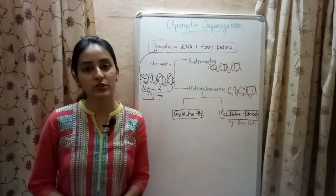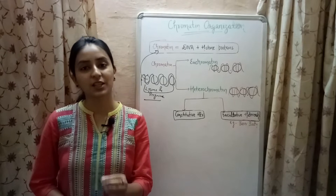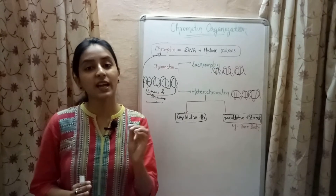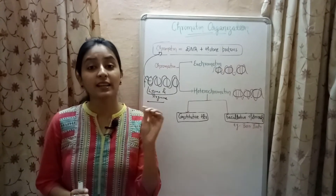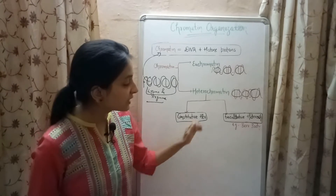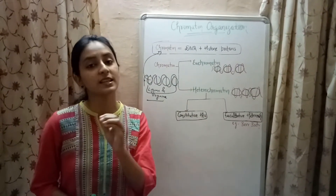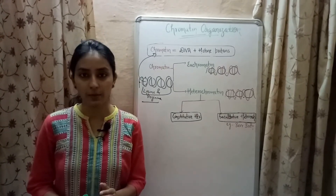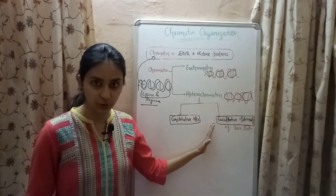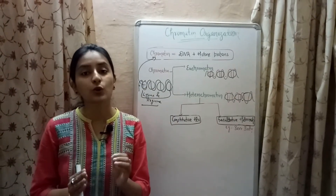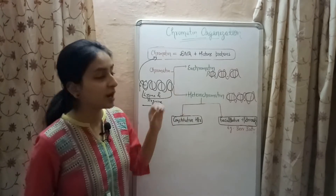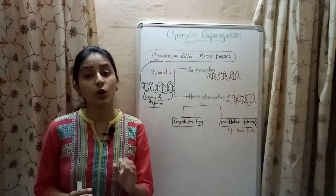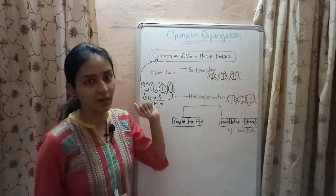Facultative heterochromatins are also known as temporarily inactive chromatins. These are heterochromatins present in the condensed state only at specific times and in specific types of cells. The DNA inside facultative heterochromatin is temporarily silenced. For example, Barr bodies present in the somatic cells of female mammals are facultative heterochromatins. Because of their compact nature, heterochromatins are least affected by environmental factors and are insensitive or less sensitive to mutations compared to euchromatin.